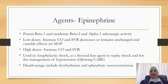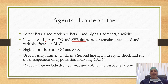Epinephrine has potent beta-1 and moderate beta-2 and alpha-1 adrenergic activity. In low dosage, it increases cardiac output and systemic vascular resistance either decreases or remains unchanged, so the ultimate effect on mean arterial pressure is variable. In high dosage, it increases both cardiac output and systemic vascular resistance. Its utility includes anaphylactic shock, as a second-line agent in septic shock, and for management of hypotension following coronary artery bypass surgery.